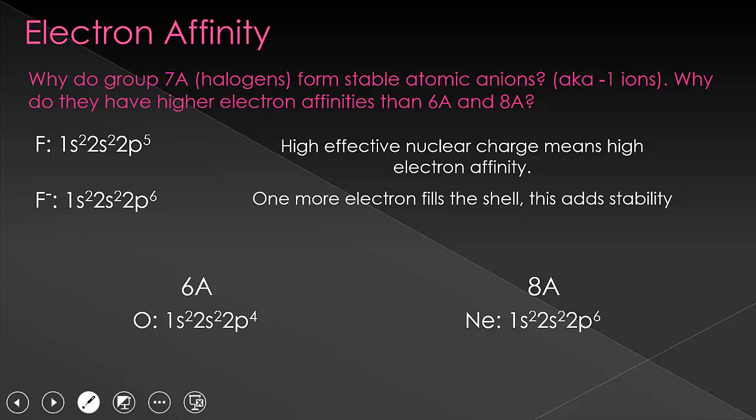Oxygen has one less proton, and therefore has a lower effective nuclear charge, giving it a lower electron affinity. So therefore, it is less likely to gain an electron because it has a lower effective nuclear charge.